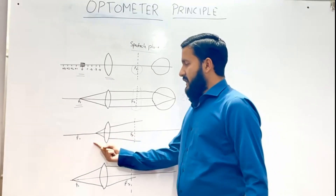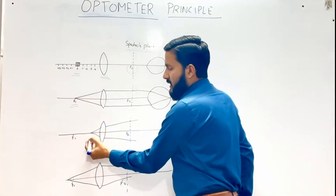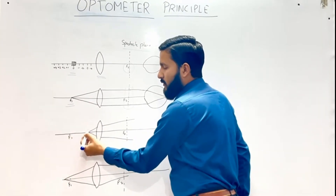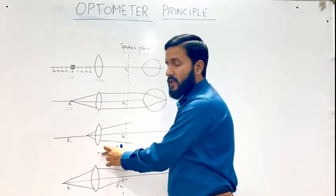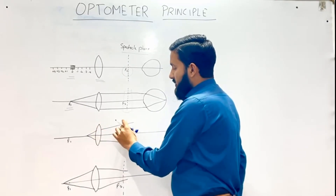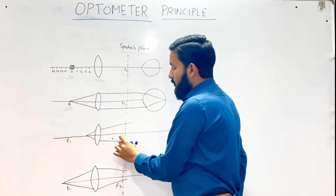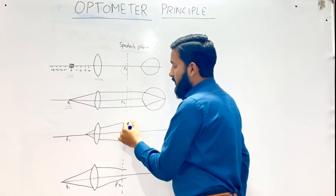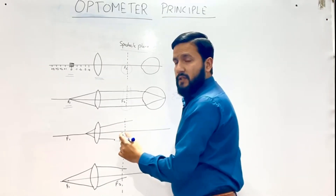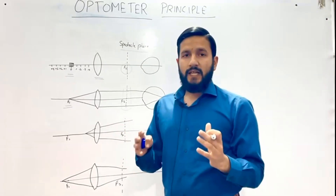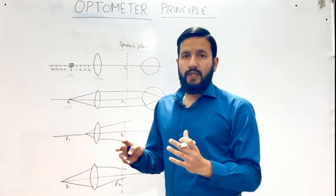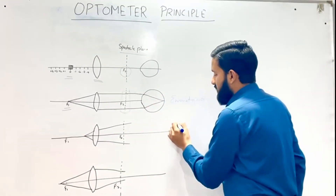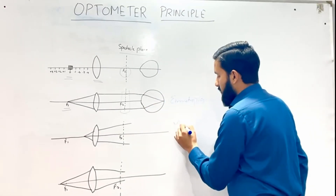In the second case, the target is at a point within the first principal focus of the convex lens. The light rays at the spectacle plane will be diverging, simulating a concave lens. This indicates myopia.